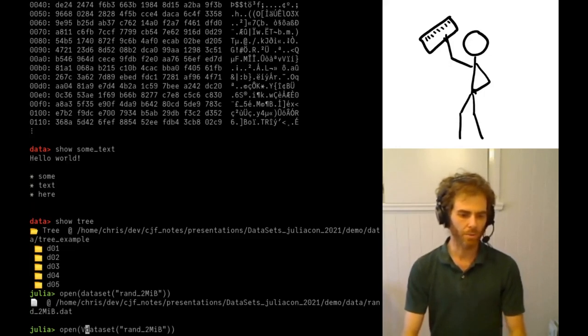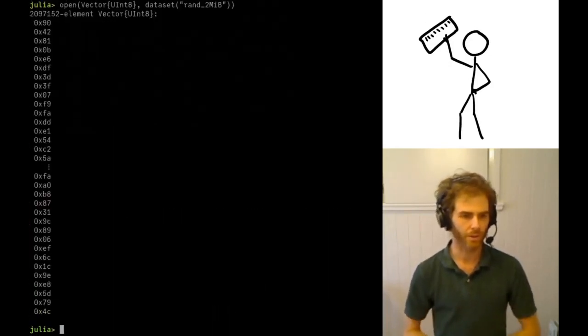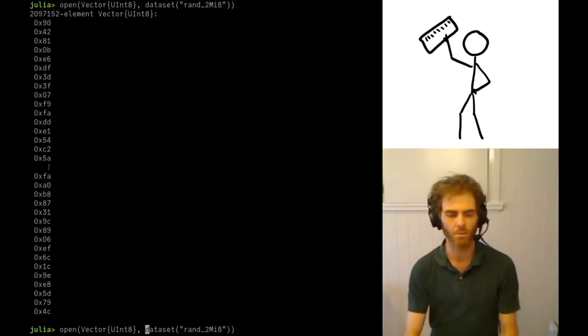But we may want to open it more conveniently as a data buffer. So we can do that as well. So here you can see we've actually got it as a vector. And then we can do something immediately with that data. This is showing you how we can map data from a named data set into a particular Julia type within our program.